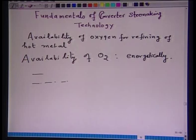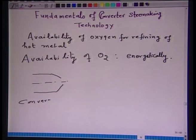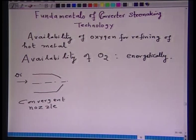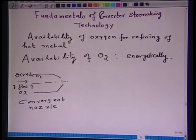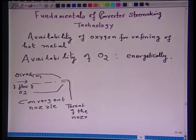There are two different types of nozzles. The first is a convergent nozzle. In a convergent nozzle, the direction of flow — for example, of oxygen — passes through a minimum cross sectional area called the throat of the nozzle. This convergent nozzle is characterized by a decrease in the flow cross sectional area as the flow proceeds, and the cross sectional area attains a minimum, which is called the throat of the nozzle.